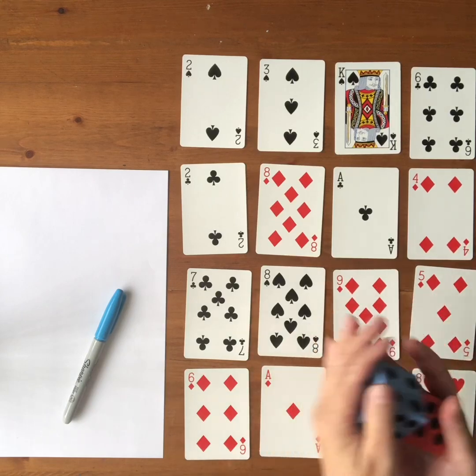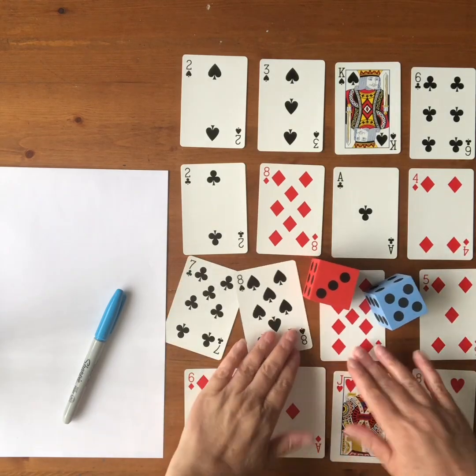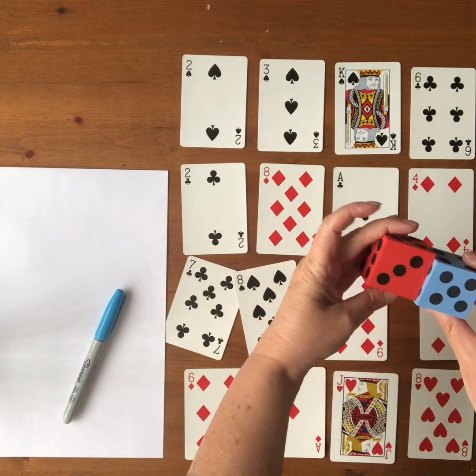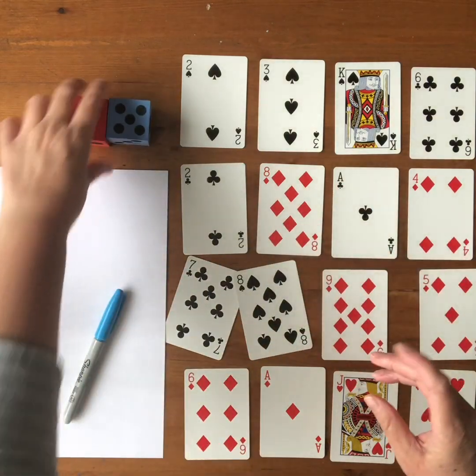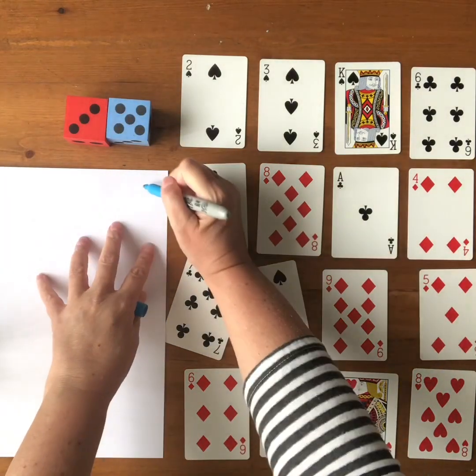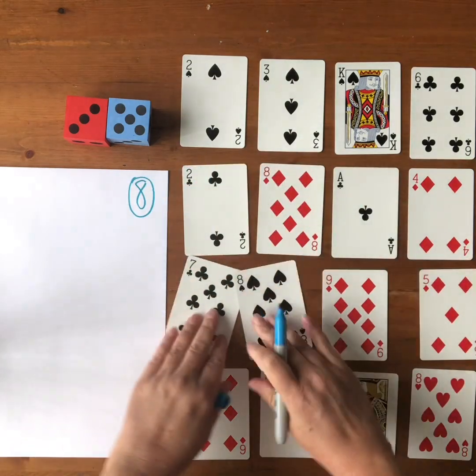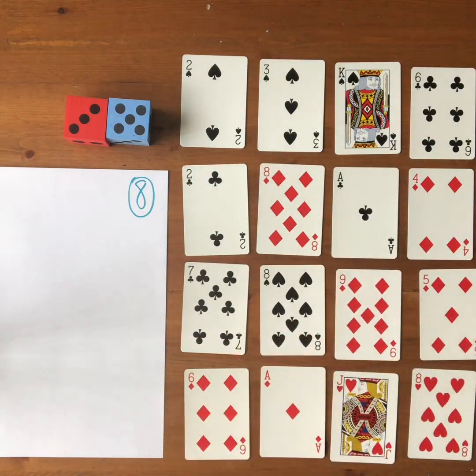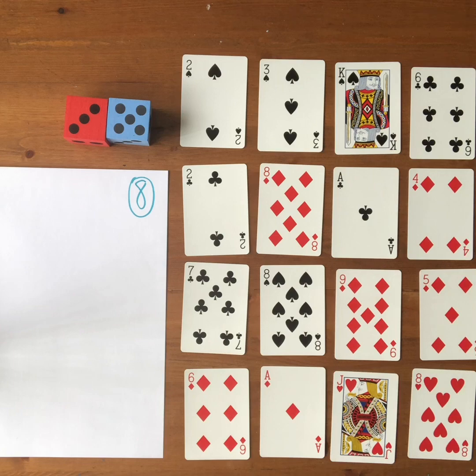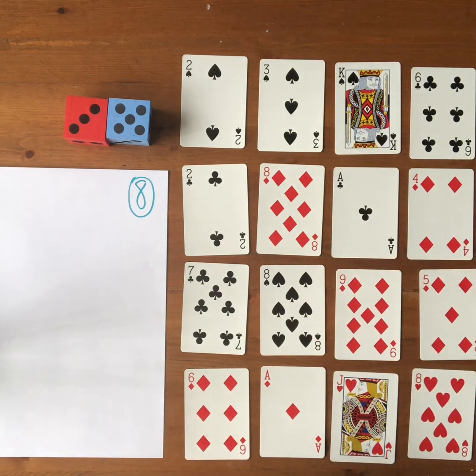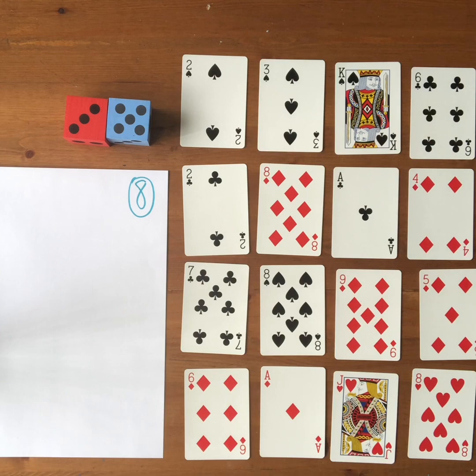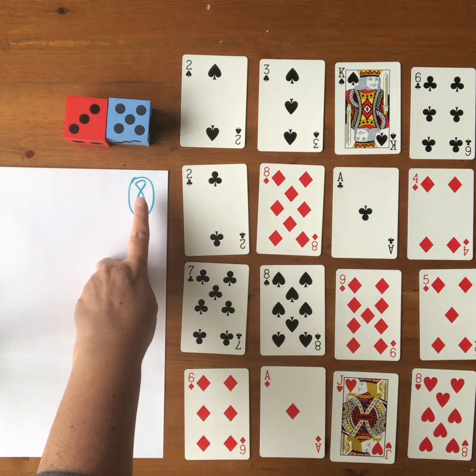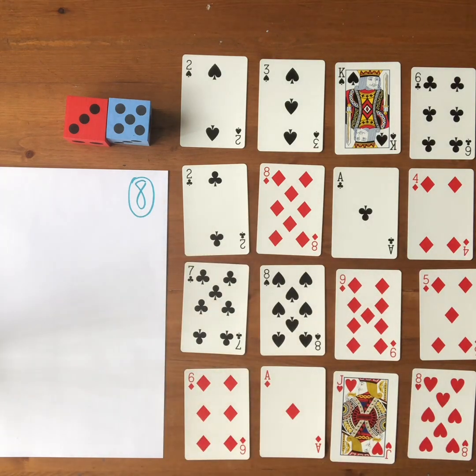I begin by rolling two dice, and that's going to be the number or target number that we're working for. So today for this game, the number that we're working towards is eight. I'm going to look at these different cards here and see what different combinations of cards I can use to create an equation that works towards eight. I can use two, three, four, or five cards at a time.